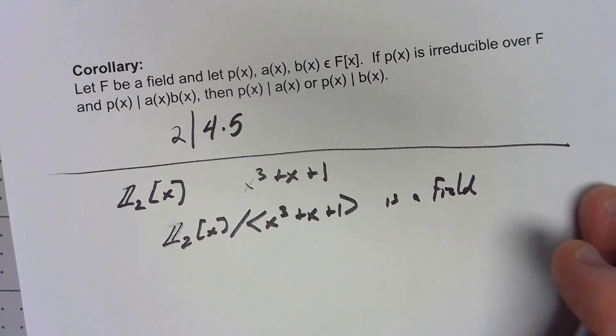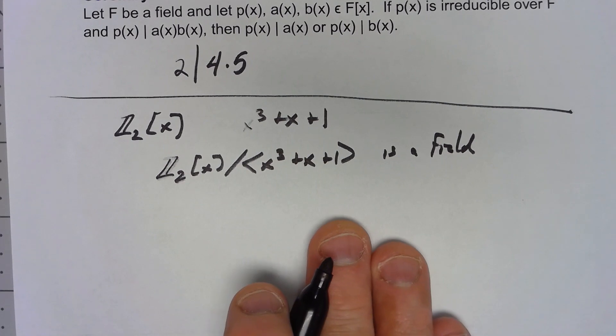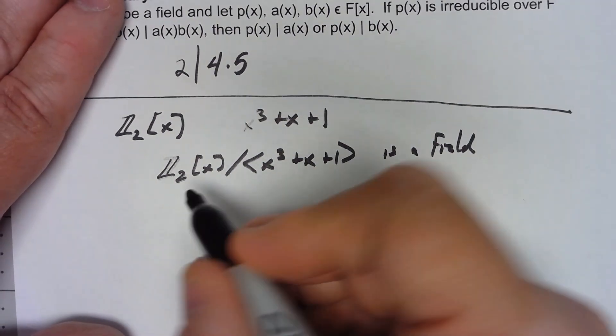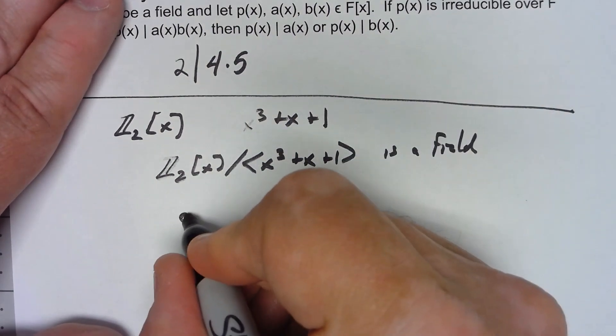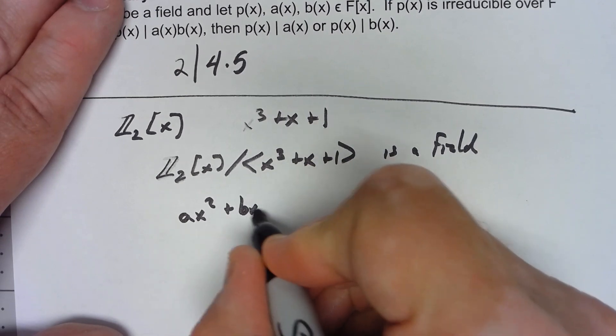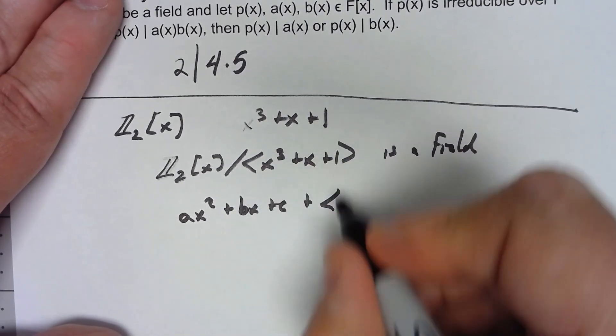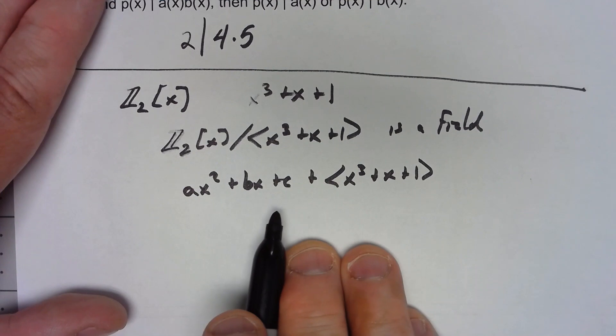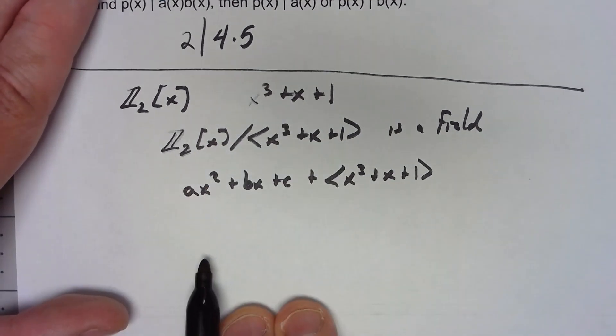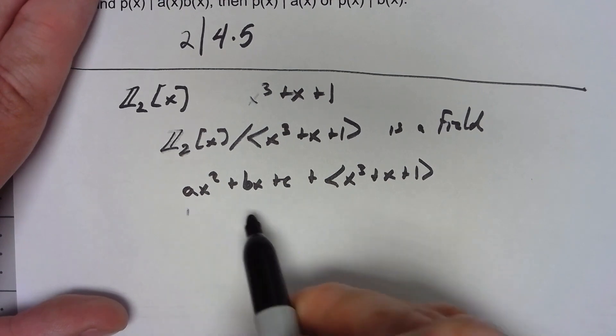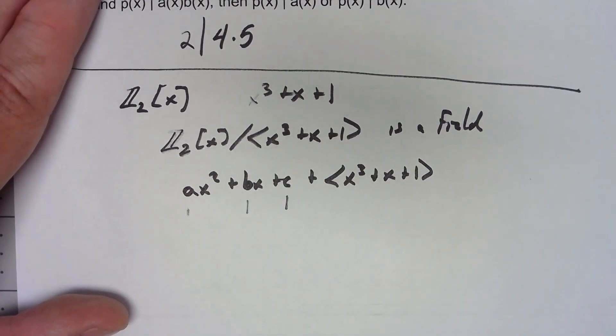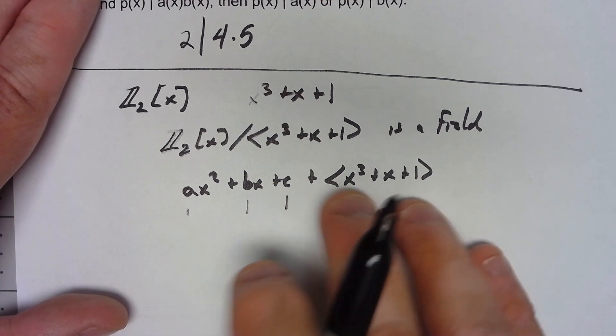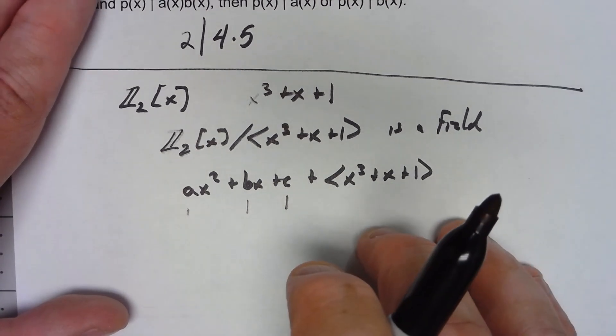But if we think about what we've got here, everything in there is going to be of the form some cubic polynomial, quadratic polynomial, something ax squared plus bx plus c plus my ideal. So that means that this thing here is a field and it has eight elements because we've got two choices for this coefficient, two for that, two for that, so we've got a field with eight elements. You can kind of use this thing to sort of construct all sorts of different types of fields that have a number of elements that are power of a prime.